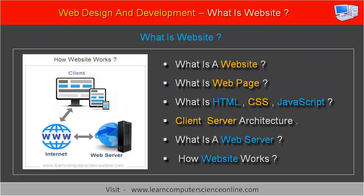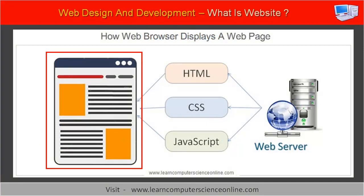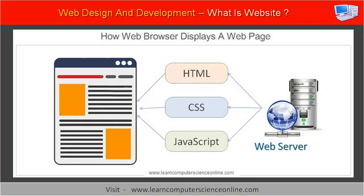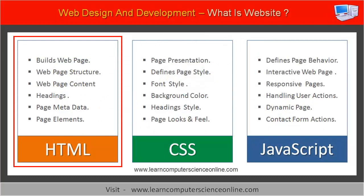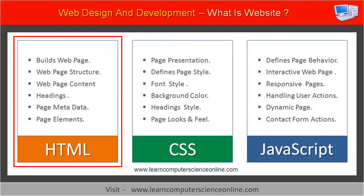Let us now understand what is a web page. A web page consists of three basic elements: first HTML, second CSS, and third JavaScript. HTML stands for HyperText Markup Language. The HTML code provides the structure to the web page, such as the web page layout.